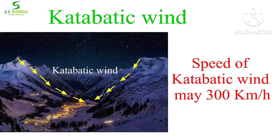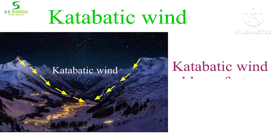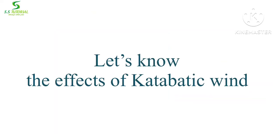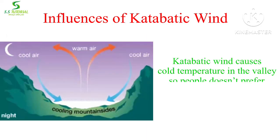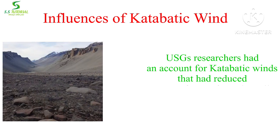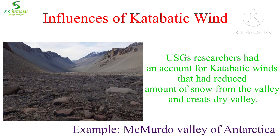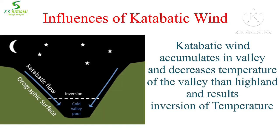Katabatic winds are often gentle, but sometimes they blow strongly — around 300 km per hour, like hurricane force. Katabatic winds blow fastest before sunrise. Katabatic winds reduce humidity in the air and blow away snow. These winds cause cold temperatures in the valley, so people do not prefer to settle in the valley. These winds also bring pollution into the valley. USGS researchers documented katabatic winds that reduced snow amounts in valleys so much that they are known as dry valleys, such as the McMurdo Dry Valleys in Antarctica. As katabatic wind blows downslope, winds accumulate in the valley, so temperature decreases in the valley compared to the highlands. This causes temperature inversion.